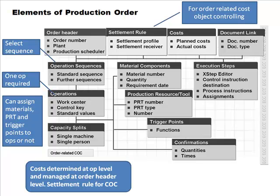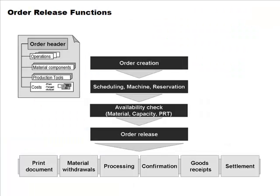Costs are determined at the operation level, which makes sense because much of the cost comes from work centers and it is the operations that are connected to the work centers. However, costs are managed at the header level — meaning the total cost is calculated at the header level and any allocations are done there.